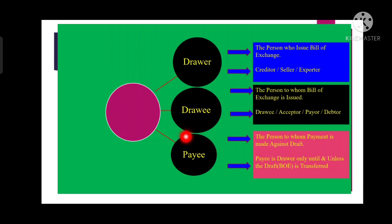The last party involved in a bill of exchange transaction is the payee. The payee is the person to whom the payment will be made — basically the person to whom the amount of the bill of exchange is to be paid. The payee can be the drawer himself or the creditor of the drawer. Drawer and payee are the same entity unless the drawer transfers the bill of exchange to a third party. If the drawer has transferred the bill to a third party, then that third party will be called the payee; otherwise the payee and the drawer are always the same.